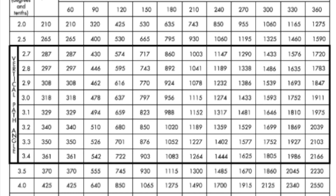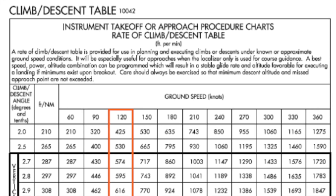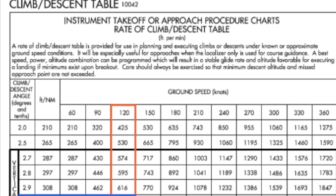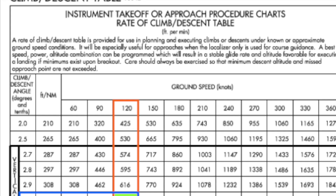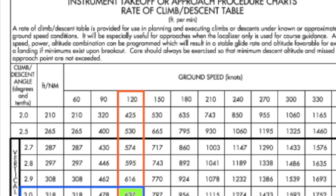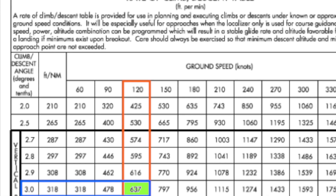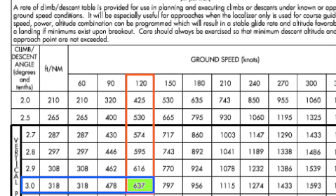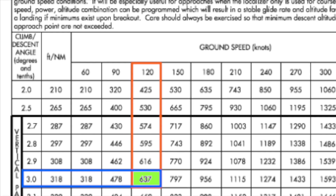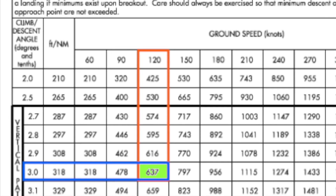I think my mood for this question is already improving. With this table, all we have to do is go up to the top row, which would be our given ground speed, and select the column that lists 120. Then travel down that column until we line up with the glide slope column on the farthest left side listing our given glide slope angle of 3.0 degrees. We will cross at a point giving us a number of 637, meaning we need to be descending at a rate of 637 feet per minute. And that's how we solve that question.